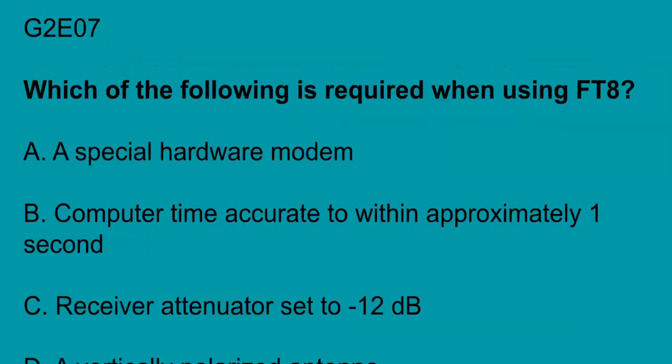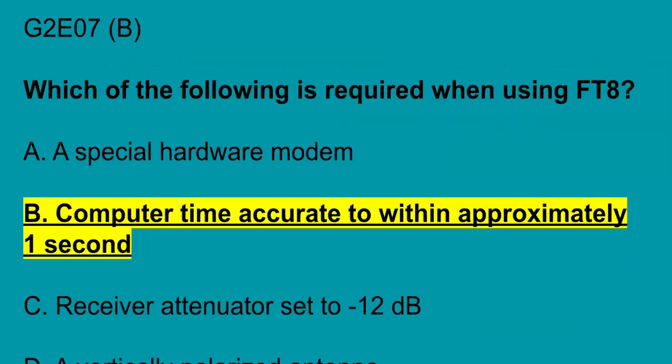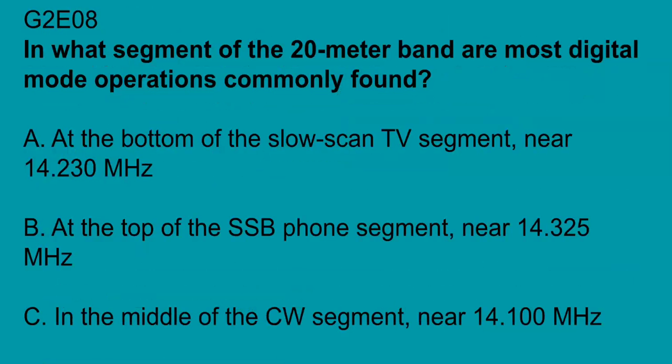G2E07: which of the following is required when using FT8? G2E08: in what segment of the 20 meter band are most digital mode operations commonly found? That's going to be between 14.070 MHz and 14.100 MHz.